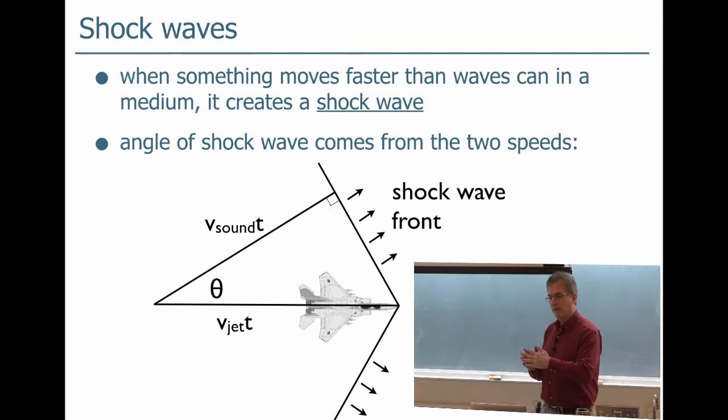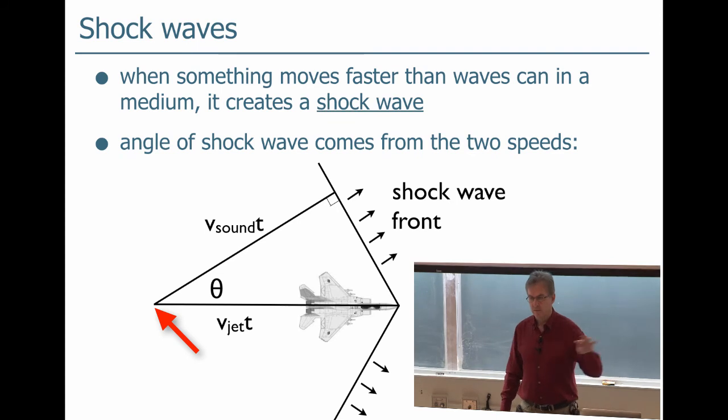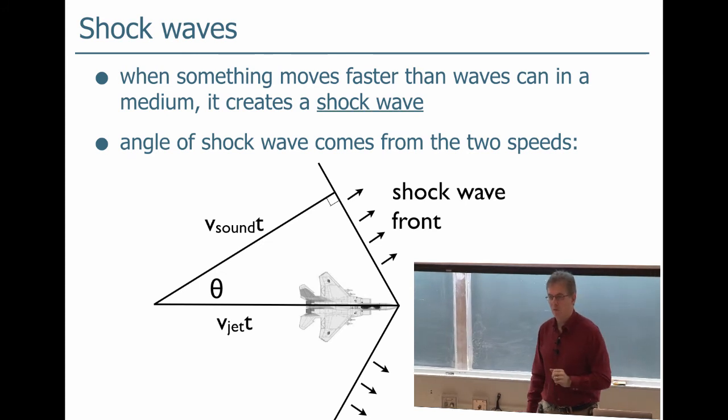So if you work it out what you find is that this pulse has a certain angle with respect to the jet. When the jet was back here at the point of this triangle a split second ago and emanated the wavefront, the wavefront traveled forward at the speed of sound which is slower than the jet which is going here faster than the speed of sound.